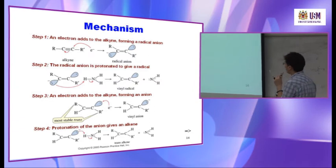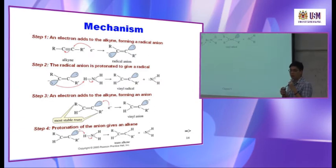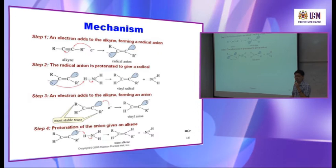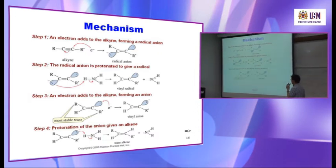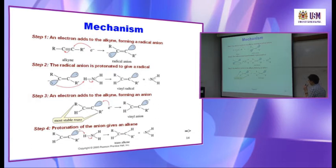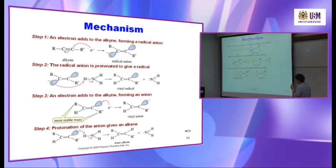Step three: the reactive site is the radical. Another electron from the sodium attacks the radical, forming an anion — converting the radical into a lone pair with a negative charge. This is shown with a single-headed arrow from the electron to the radical. You now have a vinyl anion.